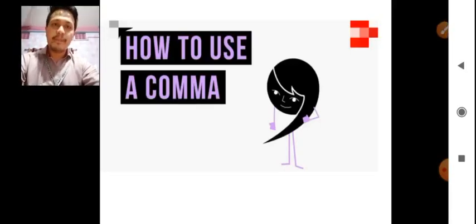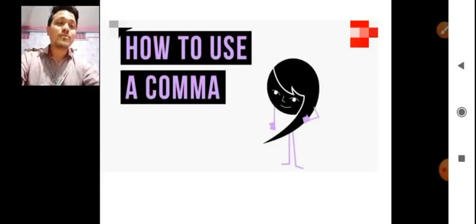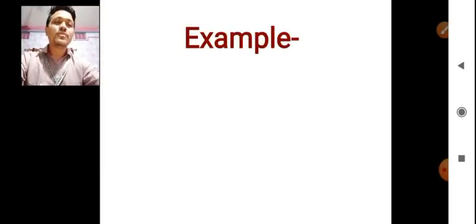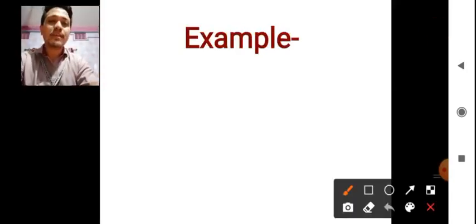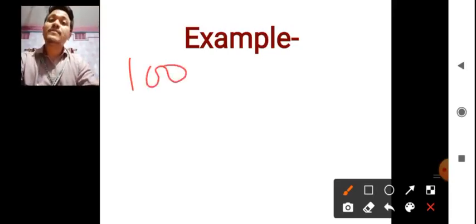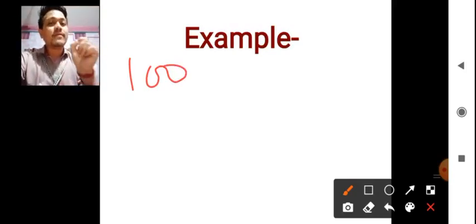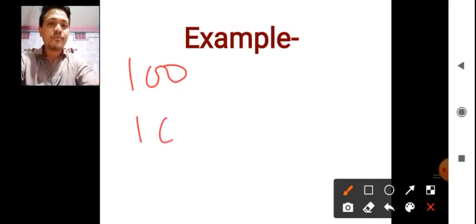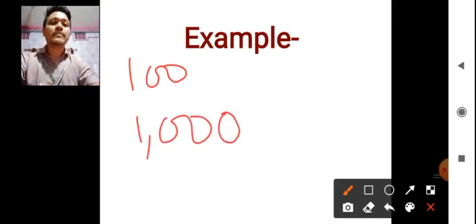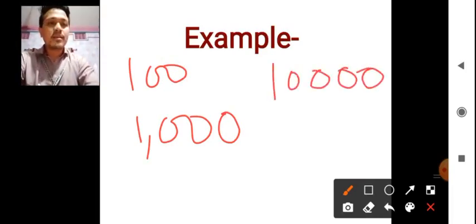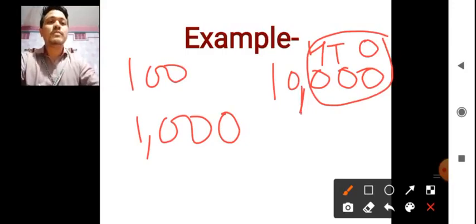Next thing we are going to see in this chapter is how to use a comma. Many of us face a problem with where and how to use a comma. I will give one example — for 1000, we will not put any comma in the 100 place. We will start putting comma only from the 1000 place. So if you have 1000, the comma is given after the 1 here. If you have 10,000 — after 3 digits, that is 1s, 10s and 100s — one comma should be given.